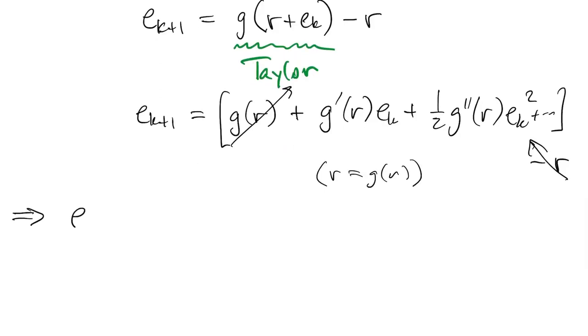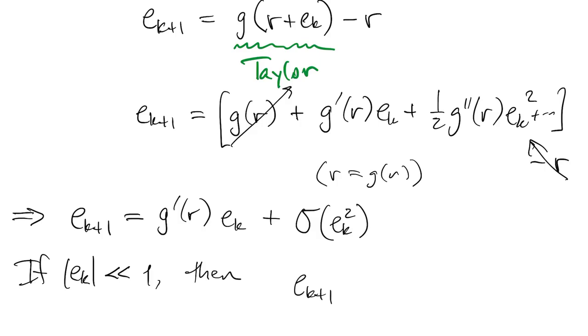So what we're left with is that the error at step k plus one is g prime of r times the error at step k plus some higher order terms. And if the error is small, then we can ignore those higher order terms because squaring them makes them even smaller. And so we just get this simple relationship between the errors at one step and the next.